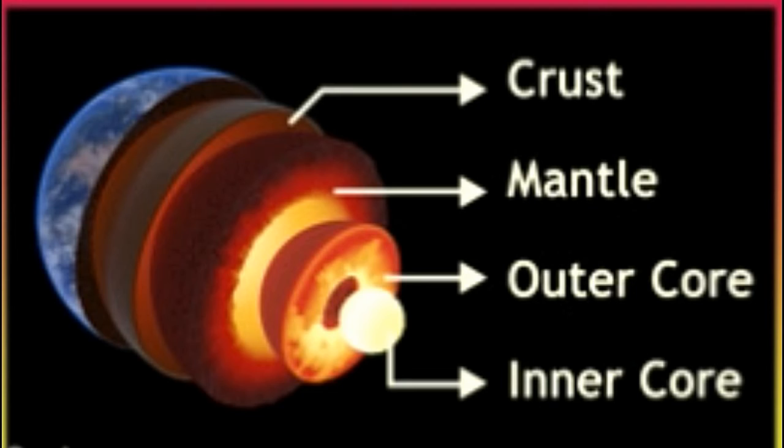As the Earth rotates, the outer core, consisting of iron, spins over the inner core and generates the Earth's magnetic field.